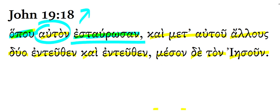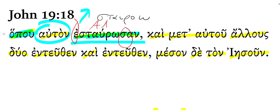Estaúrōsan — that is from the verb stauroō, which we've seen several times recently, and it means to crucify. Notice what we have here: we have an augment, we have a sigma alpha, so this is going to be an aorist active indicative. It's third person plural, referring of course to the Roman soldiers within context.